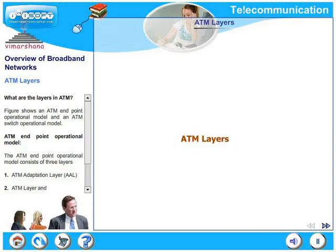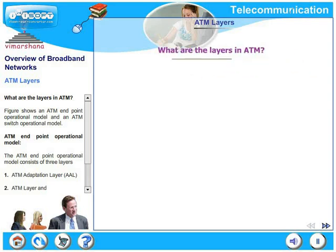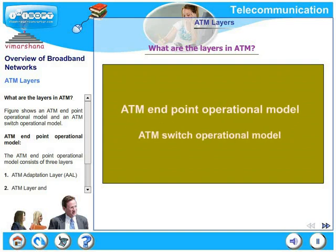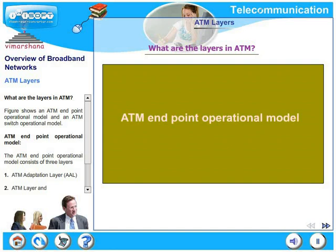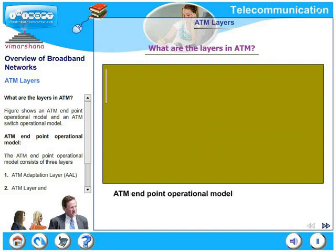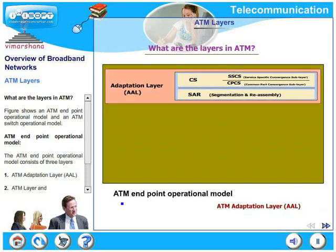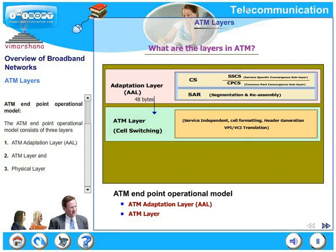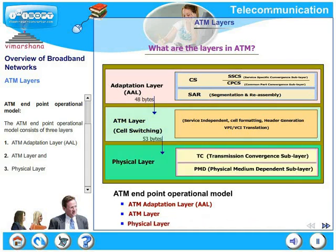Let us now look at ATM layers. What are the layers in ATM? This shows an ATM endpoint operational model and an ATM switch operational model. The ATM endpoint operational model contains three layers: the ATM adaptation layer AAL, the ATM layer, and the physical layer. Let us now look at them briefly.